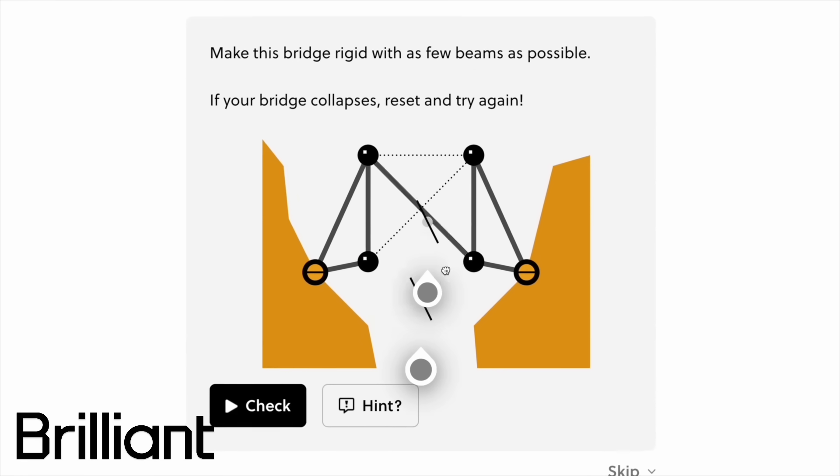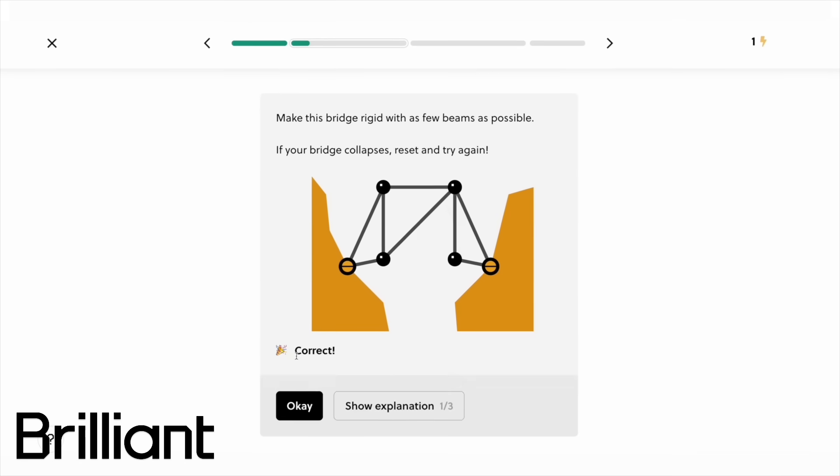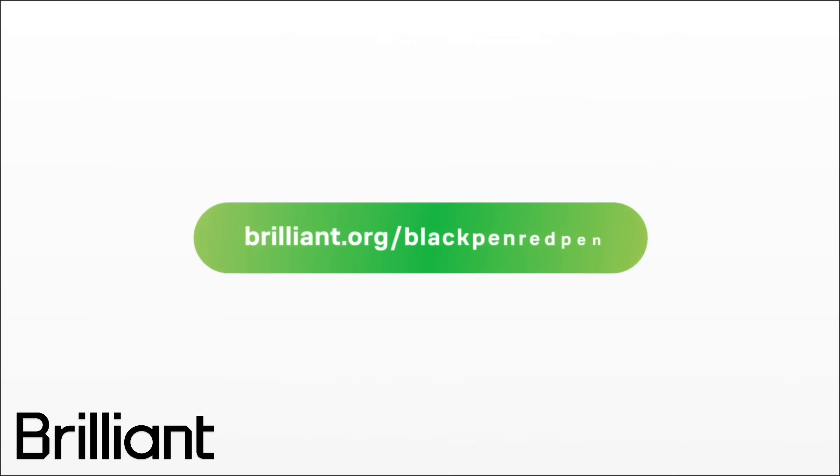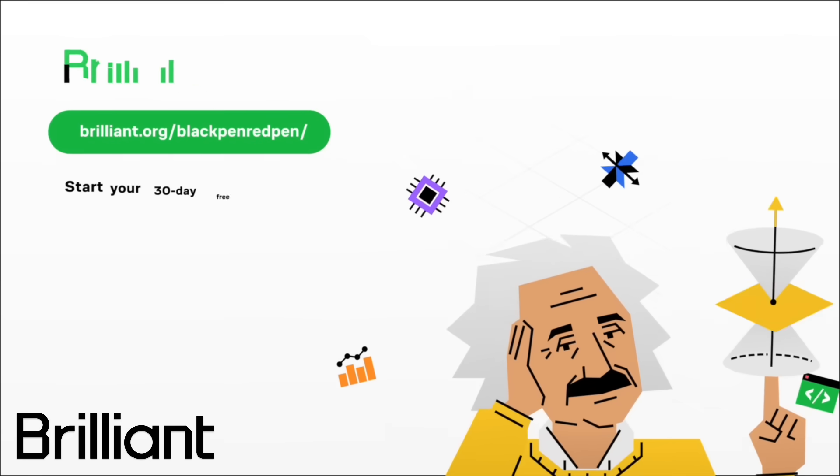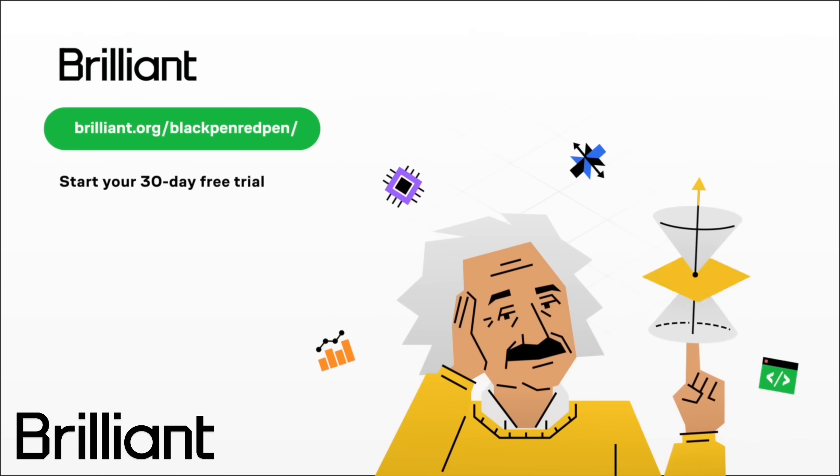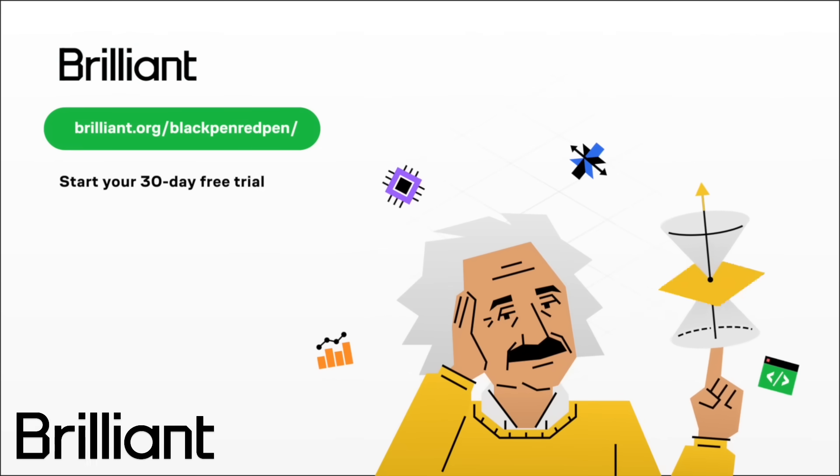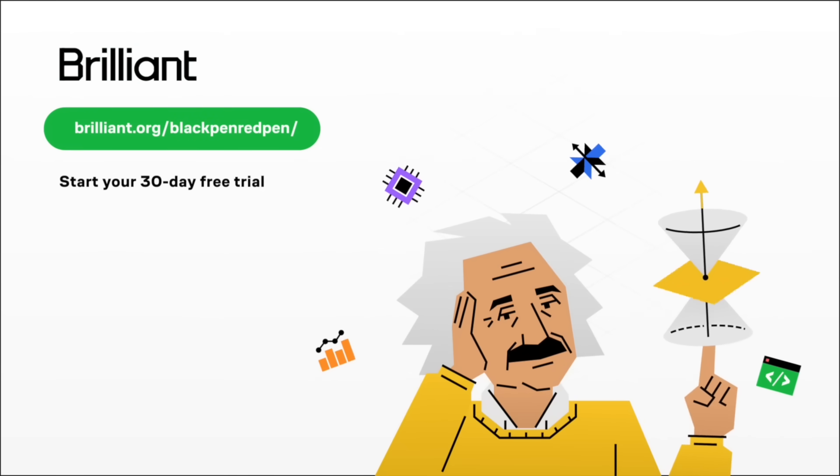I can't recommend Brilliant enough to you since they've got so much to offer. Right now, you can even try them for free for 30 days. Click the link in the description, brilliant.org/blackpenredpen. This way you can also get 20% off discount. I want to thank Brilliant for sponsoring this video, and I also want to thank you guys for checking them out.